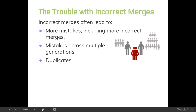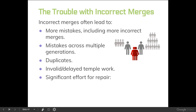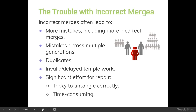Bad merges can also cause duplicates. Imagine you've got person A and person B — they're not the same person, but you merge them and person A is hidden inside person B. A user comes along, looks for person A, doesn't find them, and adds them again, not realizing they're hidden because of a bad merge. Also, incorrect merges can result in invalid or delayed temple work. And perhaps most significantly, they require quite a bit of effort to repair. Bad merges, especially multiple ones, are very tricky to untangle correctly.